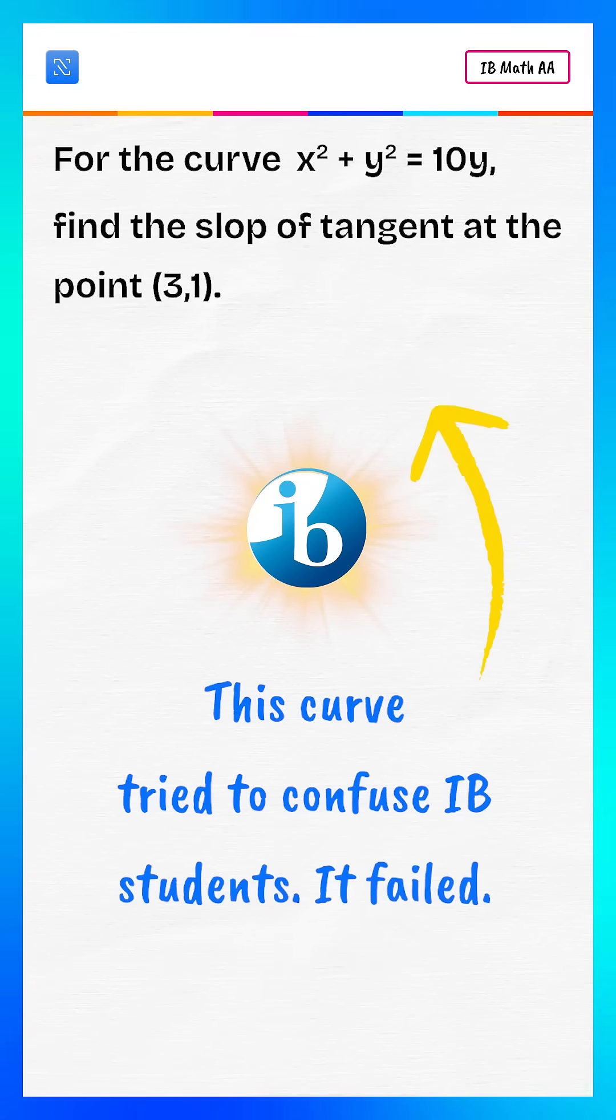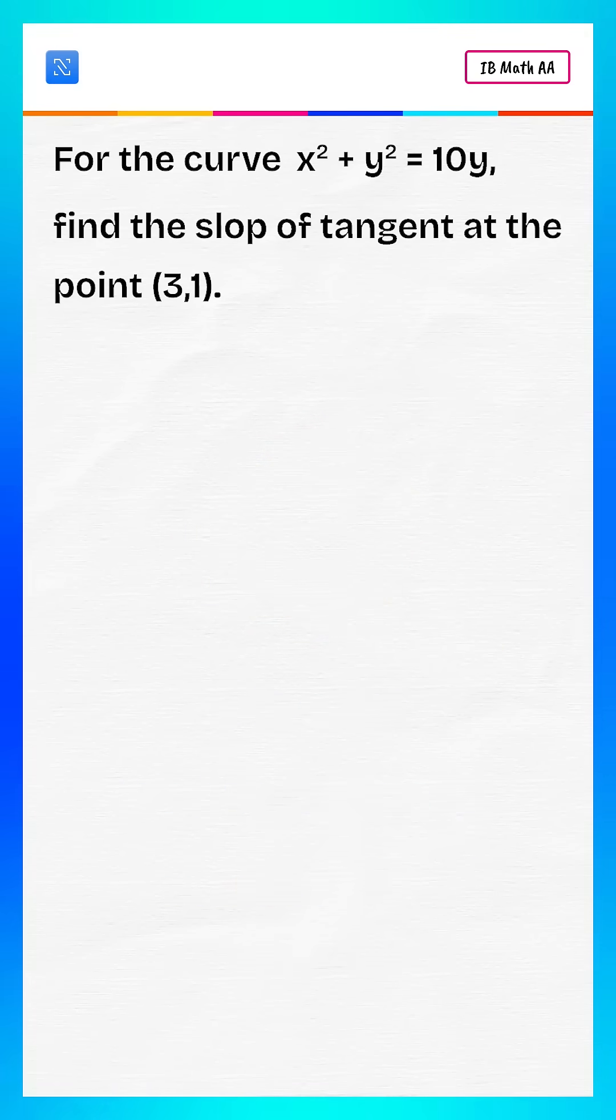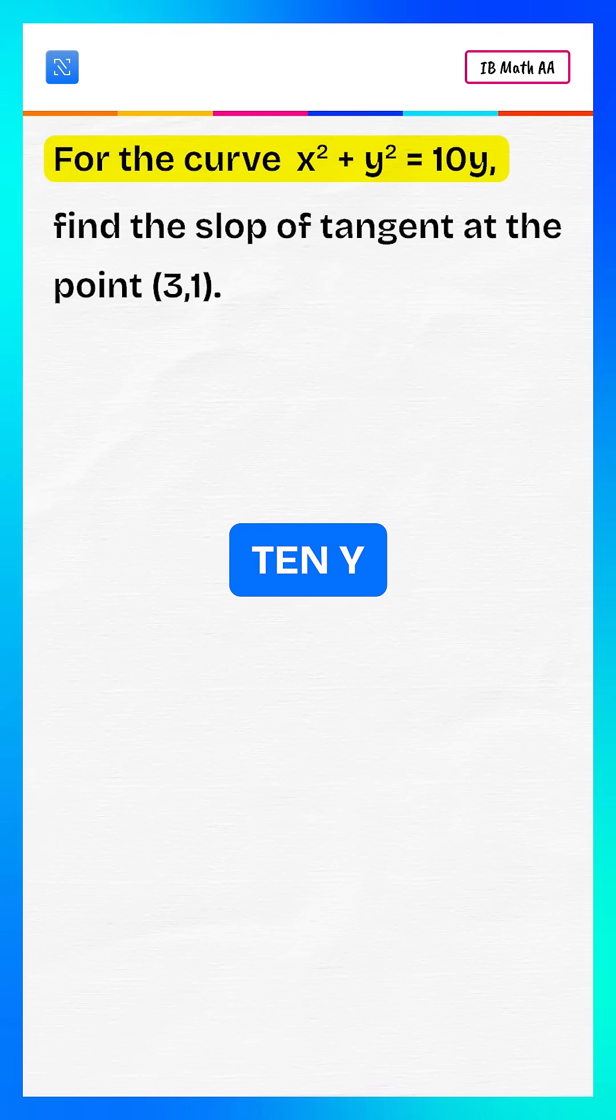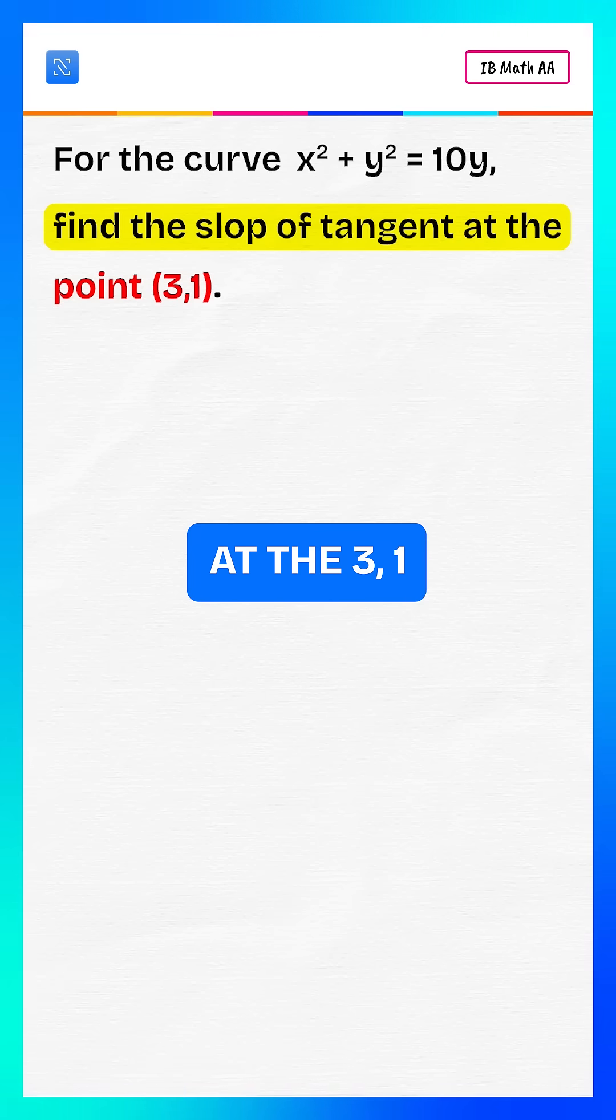This curve tried to confuse IB students. It failed. For the curve x squared plus y squared equals 10y, find the slope of tangent at the point (3,1).